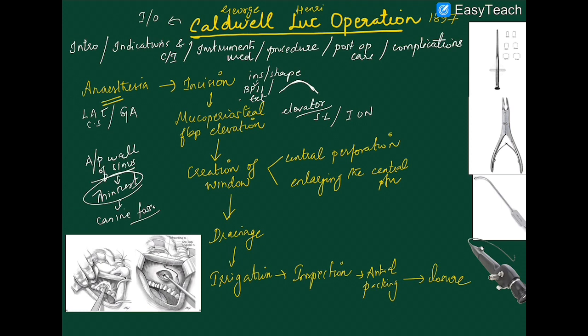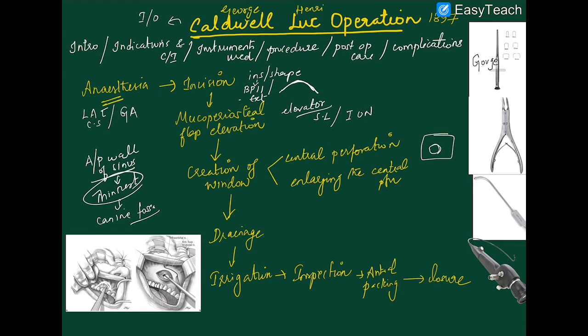With the mucoperiosteal flap elevated and the bone clearly visible, you now create a window to gain access into the maxillary sinus. First, create a small central perforation at the canine fossa using an instrument called a gouge. The gouge creates the initial small hole. Then, to enlarge the central perforation for adequate drainage and accessibility, use an instrument called rongeurs.